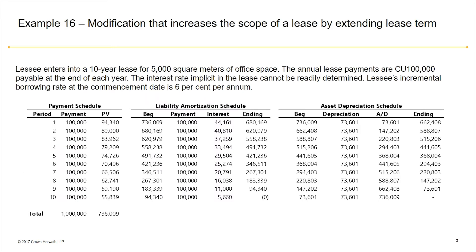Today we're going to be reviewing Example 16 from the illustrative examples. Specifically, this is a modification that increases the scope of a lease by extending the lease term. The lessee enters into a 10-year lease for 5,000 square meters of office space. The annual lease payments are $100,000 payable at the end of the year. The interest rate implicit in the lease cannot be readily determined, so the lessee will discount this lease using the incremental borrowing rate at the commencement date, which is 6% per year.